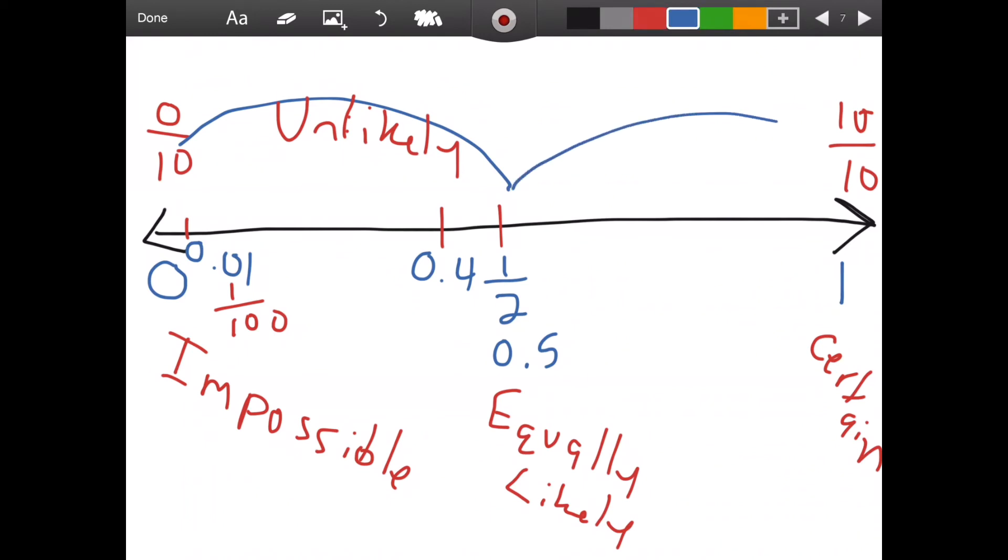On the other side, we have things that are likely and that would be anything that's better than half. Anything more than half going all the way up to certain would be considered likely. Just like we said with unlikely, we have different degrees. If I had 6 tenths versus if I had 99 hundredths, that means it's going to happen 99 out of 100 times. That's almost certain.